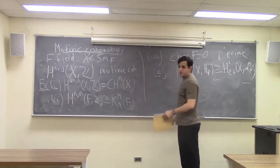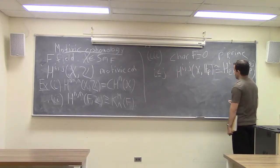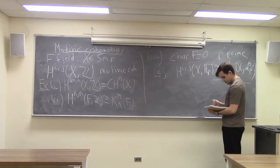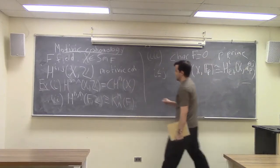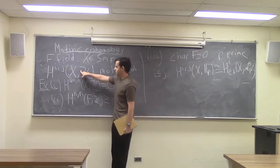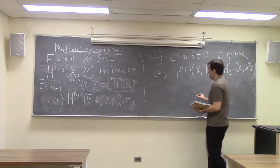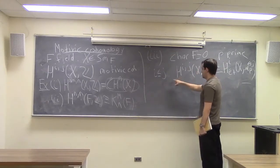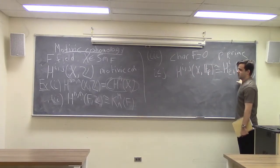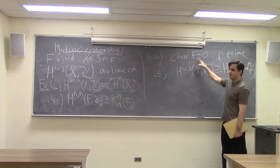And one might care about these Chow groups, and these other groups can give you information about them too. This is part of the Bloch-Kato conjecture. This statement here is the Beilinson-Lichtenbaum conjecture, which is proved. I think you can take characteristic not equal to P.